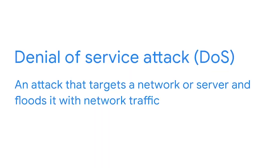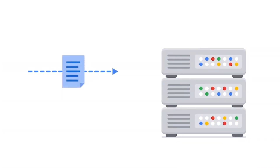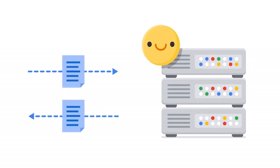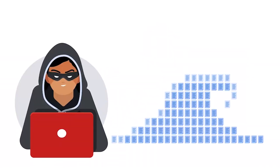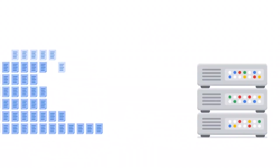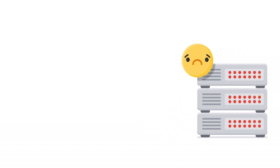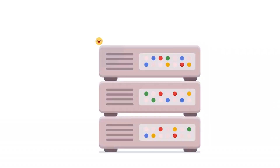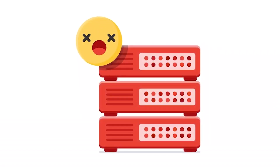In this video, we are going to discuss denial-of-service attacks. A denial-of-service attack is an attack that targets a network or server and floods it with network traffic. The objective of a denial-of-service attack, or a DOS attack, is to disrupt normal business operations by overloading an organization's network. The goal of the attack is to send so much information to a networked device that it crashes or is unable to respond to legitimate users, which can cost the organization money and time.